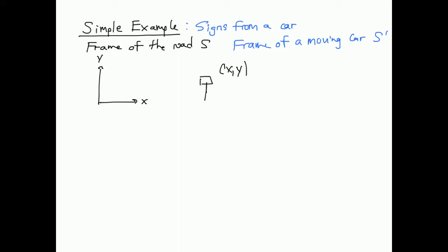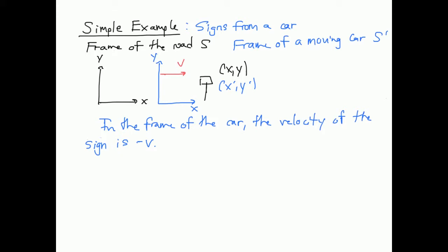Now I want to consider a car which is moving relative to this sign. That frame is going to be called S prime, moving in that direction with some speed V, and the coordinates in that frame are x prime and y prime. What is happening to the sign in the frame of the car? You've been in cars — signs come towards you with the same velocity that you're driving with. So in the frame of the car, the velocity of the sign is negative V. In my frame, it's moving in the negative x direction.